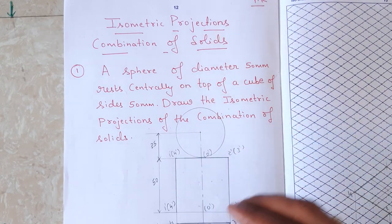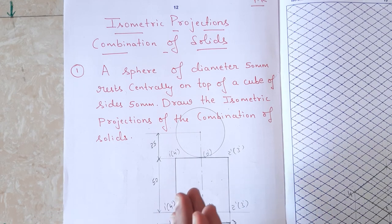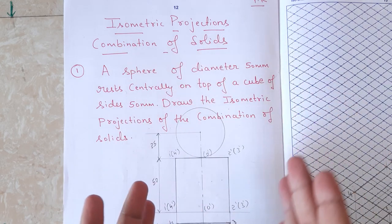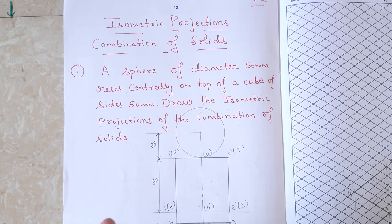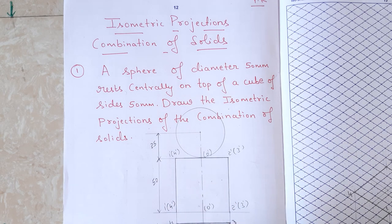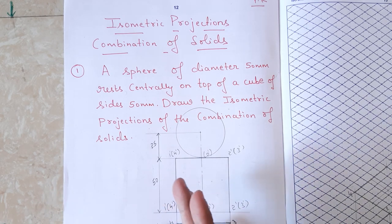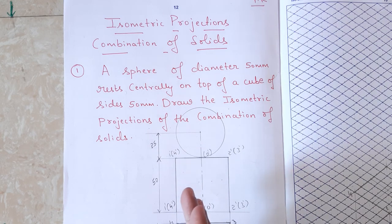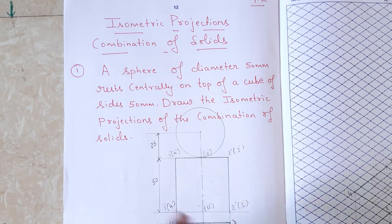Hello friends, namaste. In this video we are going to see how to draw the isometric projections of combination of solids. To know how to do this, first you should have the basics of isometric projection of planes as well as the isometric projection of solids. So before starting these kinds of problems, please go through those links given in the description and watch those videos first, then come back to this video.